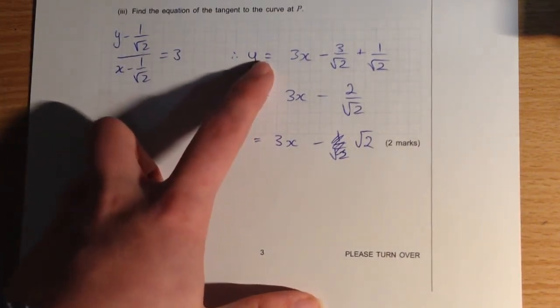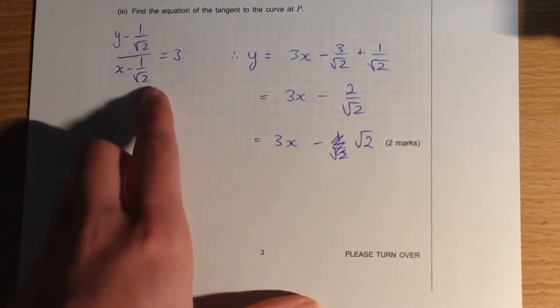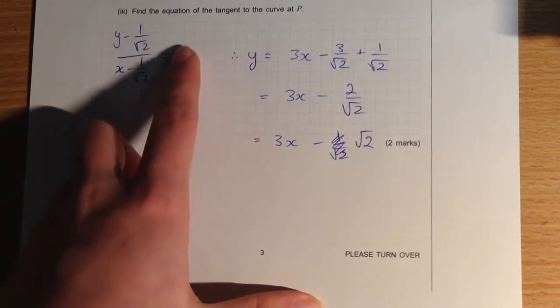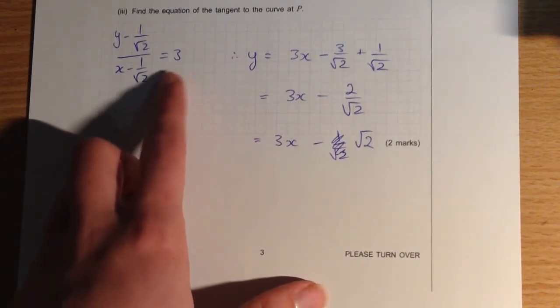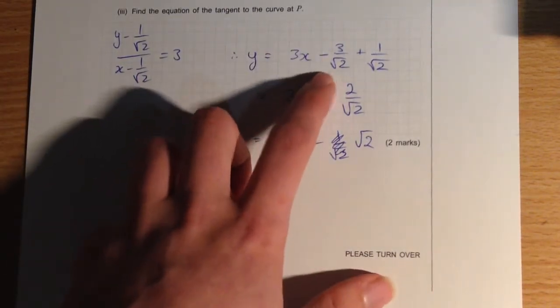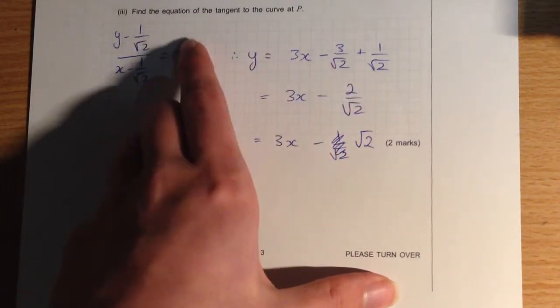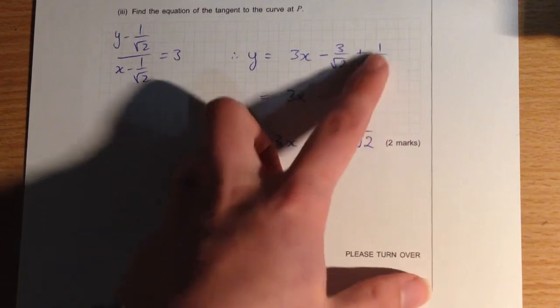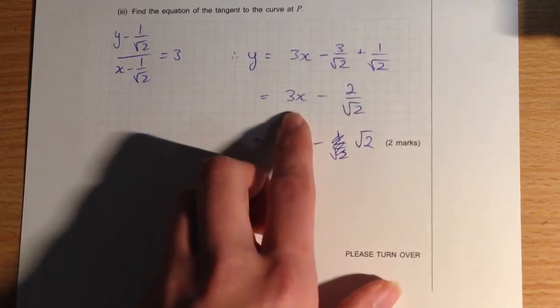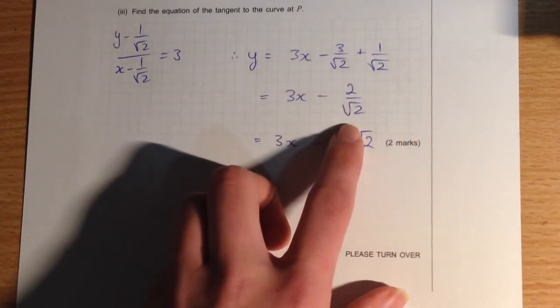So we end up with y equals 3x, again, I'm bringing this term into the right-hand side, and I'm using the distributive law. So I end up with 3x take 3 on square root 2, and then I move the negative 1 on root 2 over to the other side, so plus 1 on root 2.